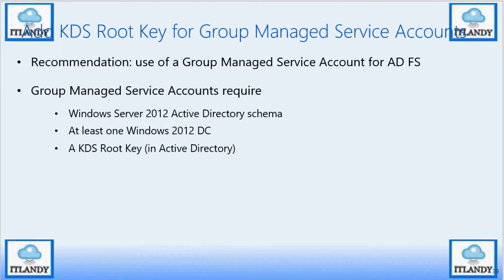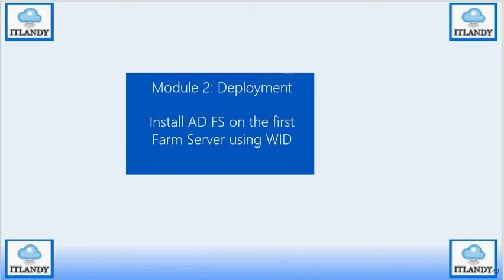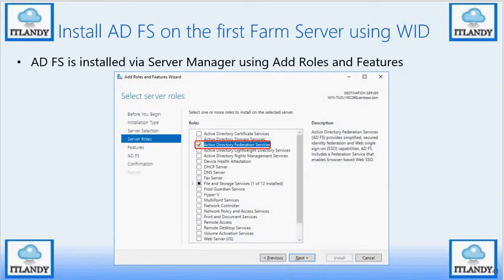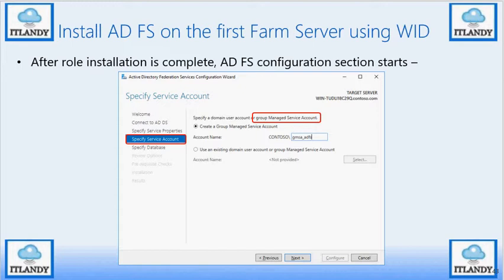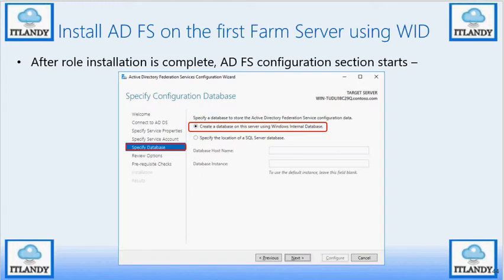Next, installing your first ADFS server. Go to Server Manager, use Add Roles and Features, select Active Directory Federation Services, and click Next. You will need to specify the certificate — either a subject certificate or a wildcard certificate to cover all names including device registration. Specify the server name, optionally use GMSA, and then create the database using either SQL or Windows Internal Database. If using SQL, specify the instance name and hostname.